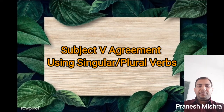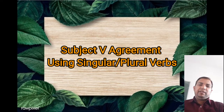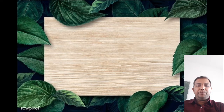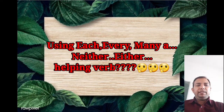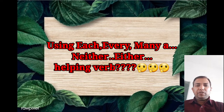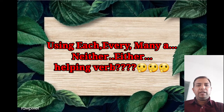Dear students, you asked me about the doubts while using subject-verb agreement — singular or plural usage — that while using each, every, many a, neither, either, should you use was or were, have — meaning singular or plural helping verbs.